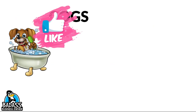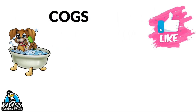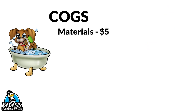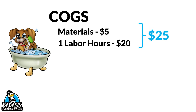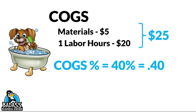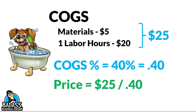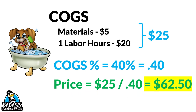Let's look at another example — a dog grooming business. Materials are $5, and you have one labor hour, for a total cost of goods of $25. Your target cost of goods percentage is 40%, or 0.40. Take $25 and divide by 0.40, and it tells you that at minimum you need to be priced at $62.50 to hit your profit goal. If you're below that, you'll miss it; if you're above, you'll hit it.